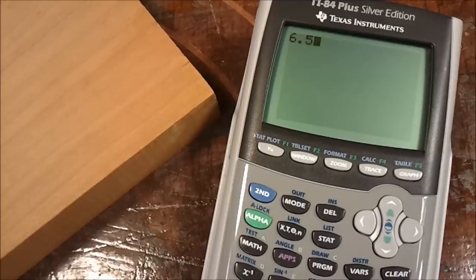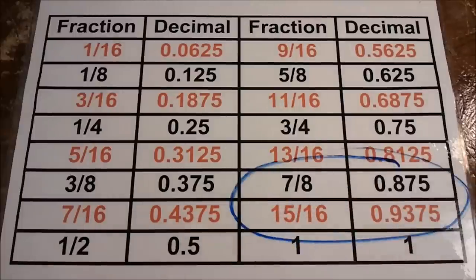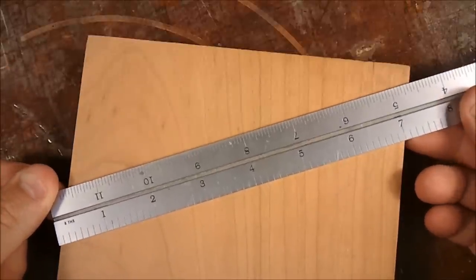Or you can divide 6.5 divided by 7, equals something in between 7.8 and 15.16. Or you can bend the rule. This automatically does the division for us.